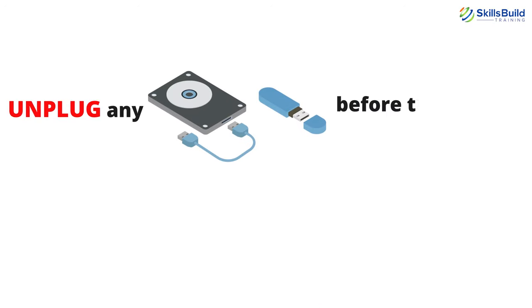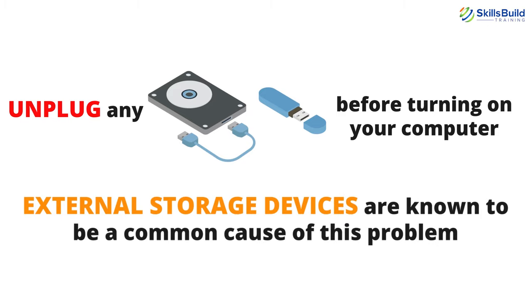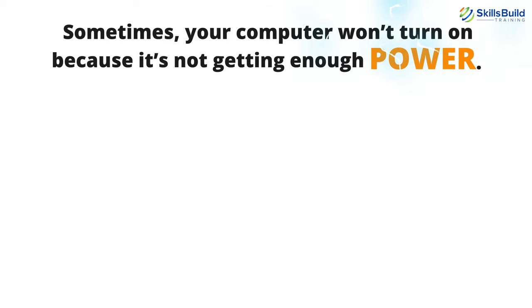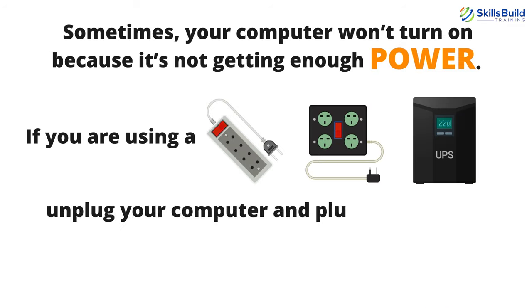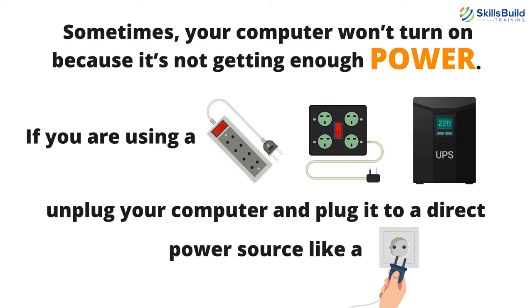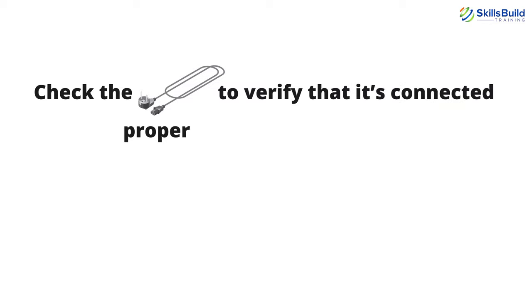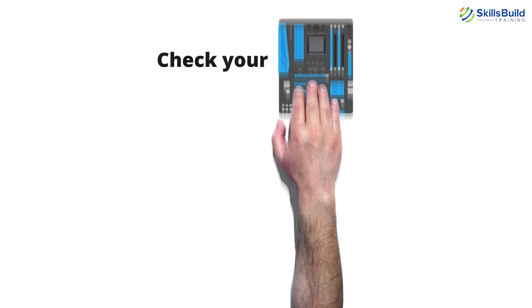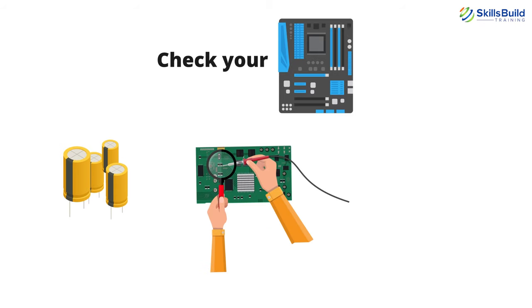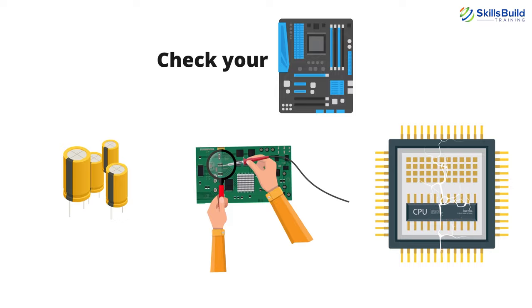Number 5: Computer Won't Turn On. Computers not turning on is a very common problem. Try the following solutions: unplug any external hard drive or USB before turning on your computer, as external storage devices are a common cause of this problem. If your computer isn't getting enough power and you are using a power strip, extension socket, or UPS, unplug your computer and plug it into a direct wall socket. Check the power cord to verify it's connected properly — unplug and plug it in again. Check your motherboard for faulty capacitors, fresh soldering, or cracks in chips, which are common causes of this problem.